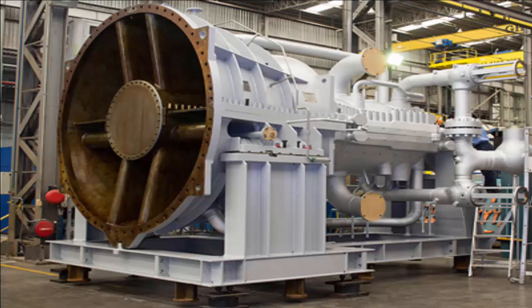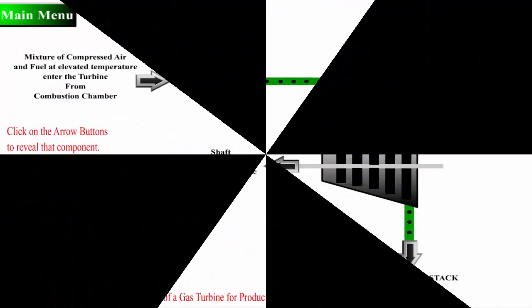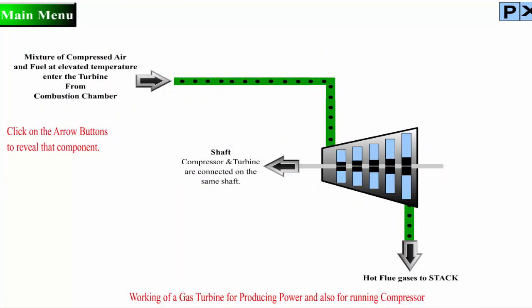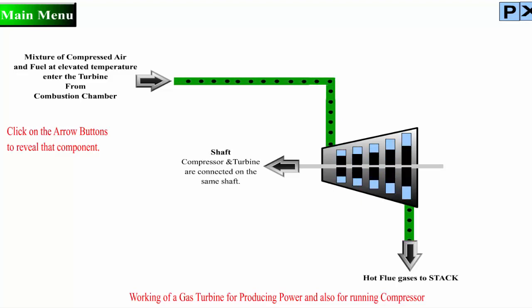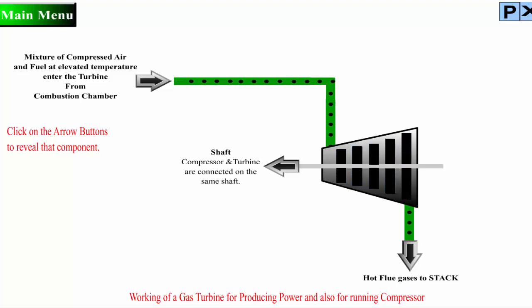Gas turbine engines derive their power from burning fuel in a combustion chamber and using the fast-flowing combustion gases to drive a turbine, in much the same way as high-pressure steam drives a steam turbine. The combustion gas turbines installed in many of today's natural gas fuel power plants are complex machines, but they basically involve three main sections.